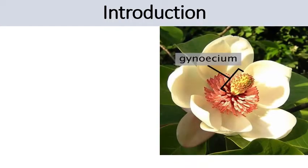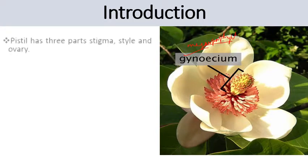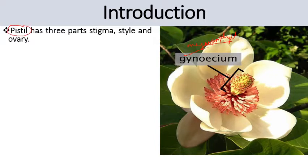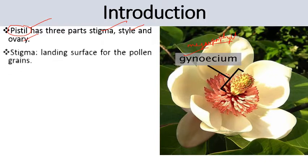The female reproductive structure is known as gynoecium in angiosperms. Gynoecium is the collective term used for carpels, and it is also known as megasporophyll. The carpel or pistil has three parts: stigma, style, and ovary.